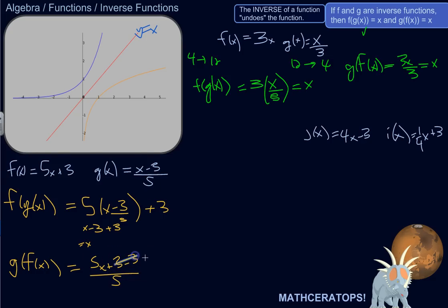So 3 minus 3 is 0, so I've got 5x over 5, which of course is just x. So these are inverses. f of g of x and g of f of x are both x.